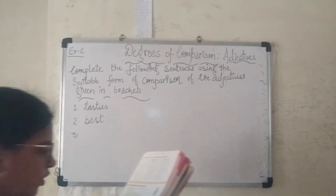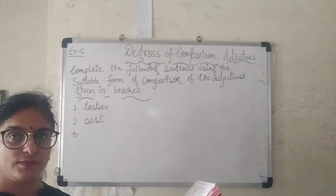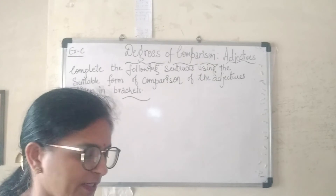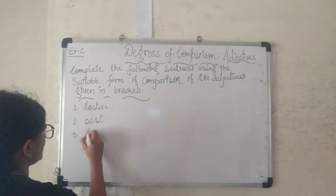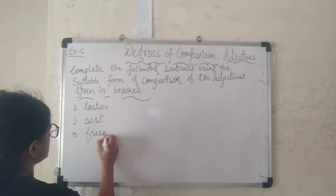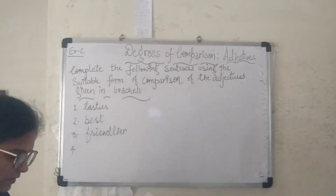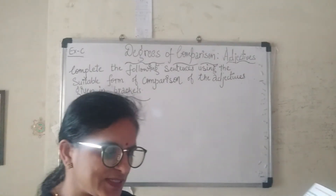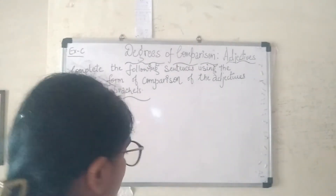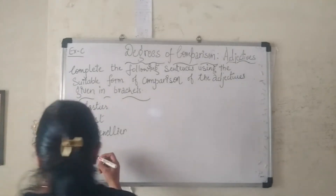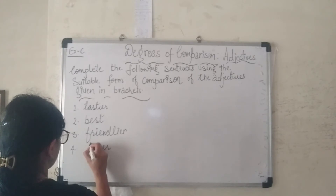Sentence 3: 'Which dog is ___, Peppy or Tommy?' The adjective is 'friendly' — the answer is 'friendlier'. Sentence 4: 'The silk from China is ___ than that from India.' The adjective is 'fine' — since 'fine' ends in 'e', just add 'r': the answer is 'finer' (f-i-n-e-r).